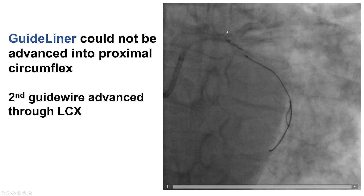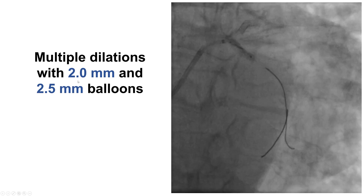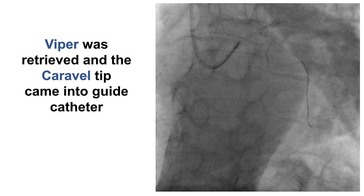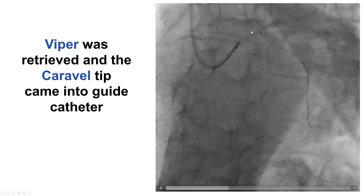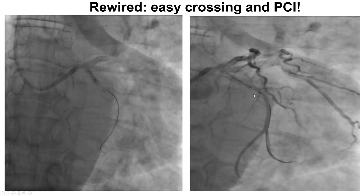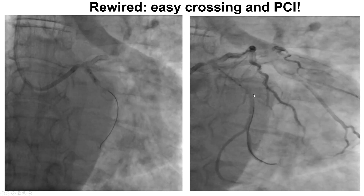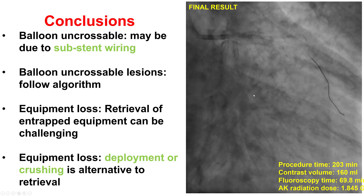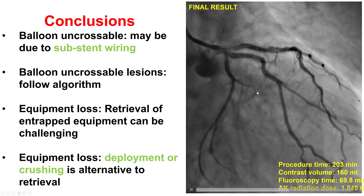In this particular case, we were able to advance a second guide wire into the circumflex and then performed multiple dilations with 2.0 and 2.5 millimeter balloons. And to our surprise, after doing that, we were actually able to retrieve the tip of the Caravel catheter all the way back into the guide catheter. We had the guide catheter extension positioned all the way to the proximal circumflex, and we were then able to retrieve the tip of the microcatheter. After rewiring, we were able to easily advance a balloon and a stent, obtaining a nice final result without any further complications.